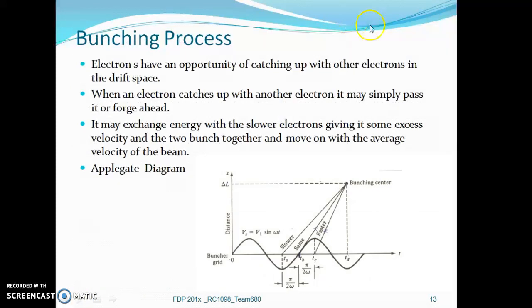Bunching process. Electrons have an opportunity to catch up with other electrons in the drift space. When an electron catches up with another electron, it may simply pass it or forge ahead. It may exchange energy with the slower electrons, giving it some excess velocity so the two bunch together and move on with average velocity of the beam.